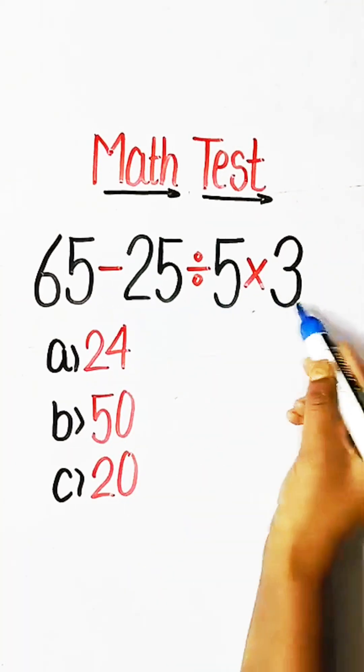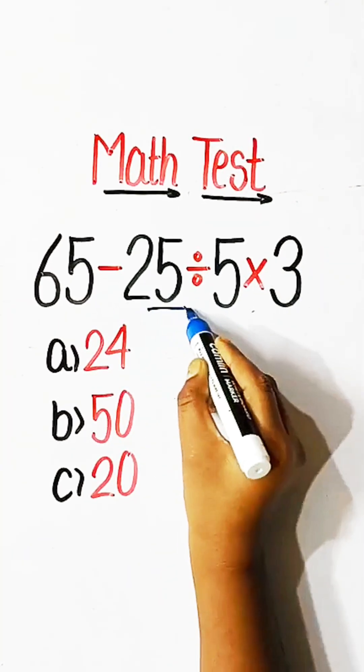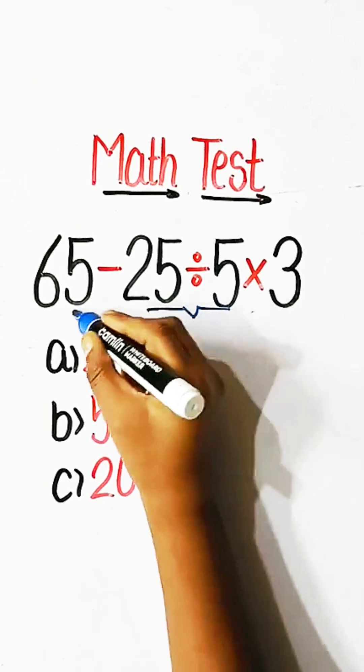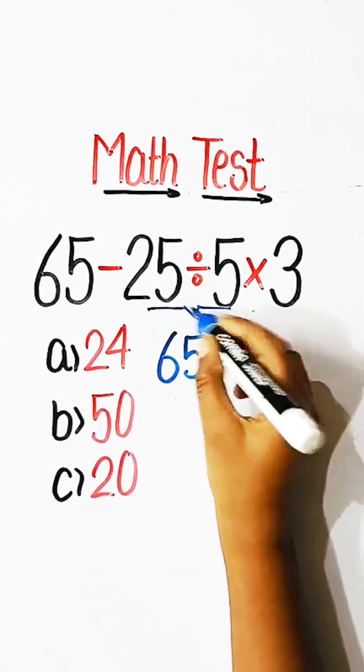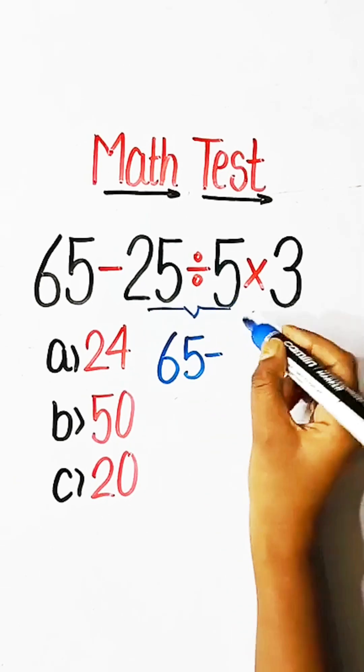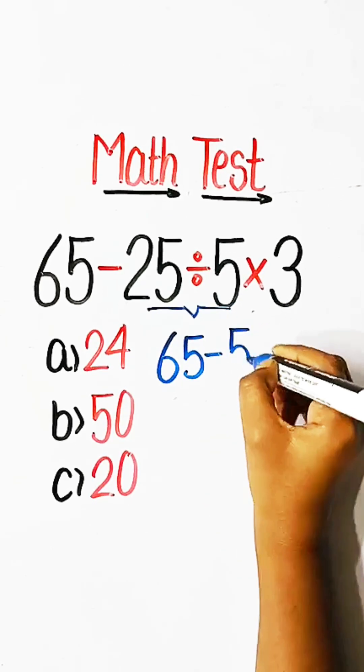So first of all, we divide. We can write here 65 minus 25 divided by 5 is 5.